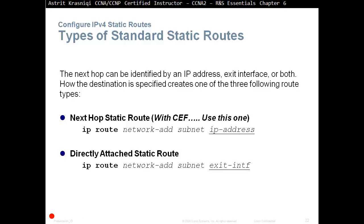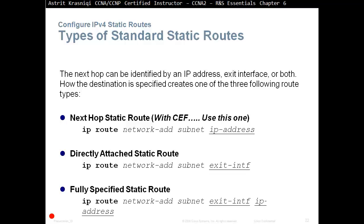Or you can have a fully specified static route, which says ip route, destination network address, destination subnet mask, our exit interface, and the neighbor's IP address. So: next hop static route, directly attached static route, and fully specified static route. These terms are very important, especially in the exam.